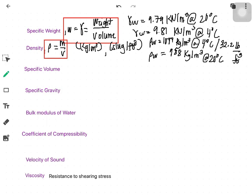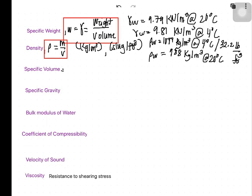Specific volume is equal to the reciprocal of density, or volume over mass. Its units are cubic meters per kilogram.